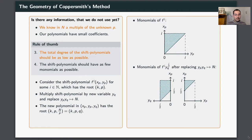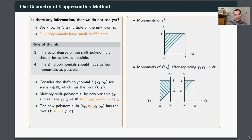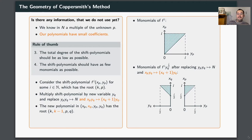For rule four, we use the fact that our polynomials have small coefficients. We introduce one more variable xq and replace every term of the form xp·yq by (xq + 1)·yq. This gives a new polynomial in four variables xp, xq, yp, yq with root (k, k minus 1, p, q). Because of the small coefficients, lots of cancellation occurs between monomials, and the shape of the polynomial becomes much simpler — with far fewer monomials than before. This satisfies rule four better.